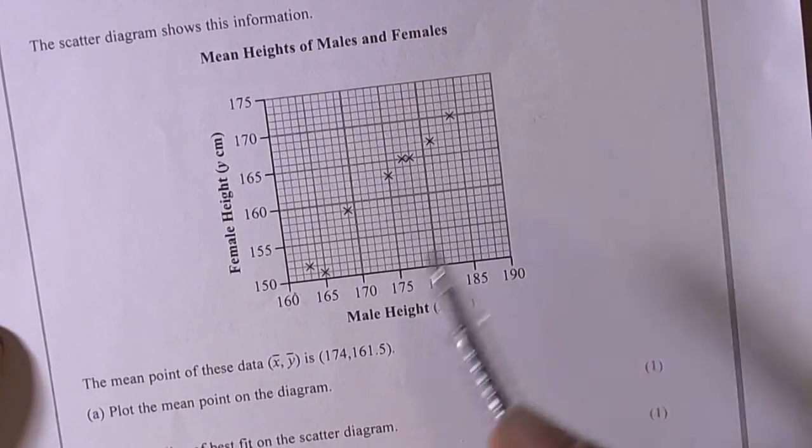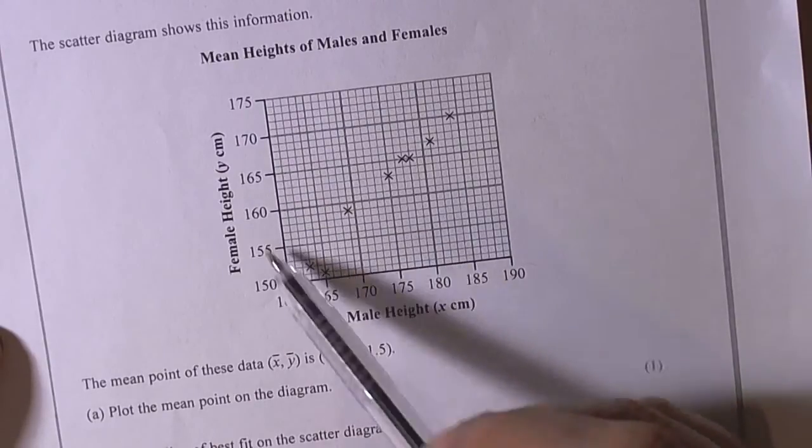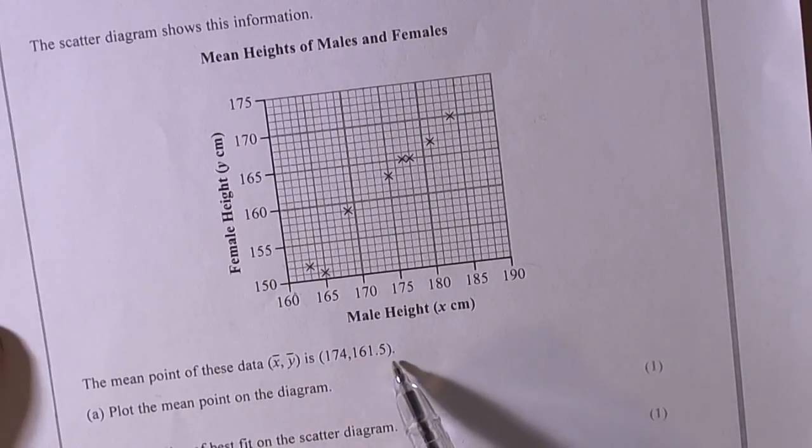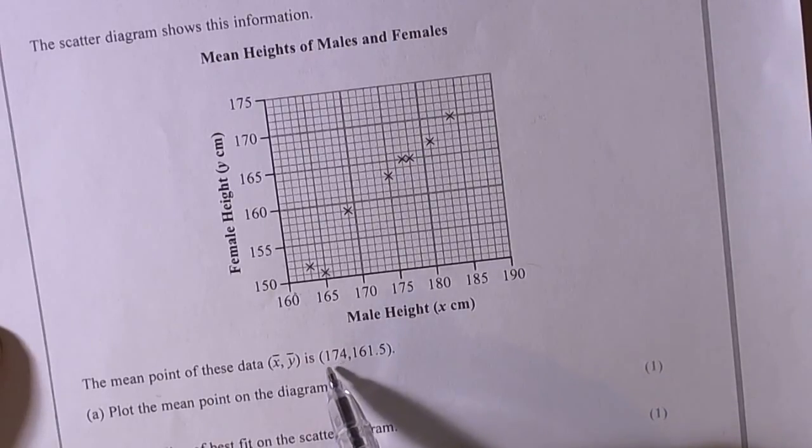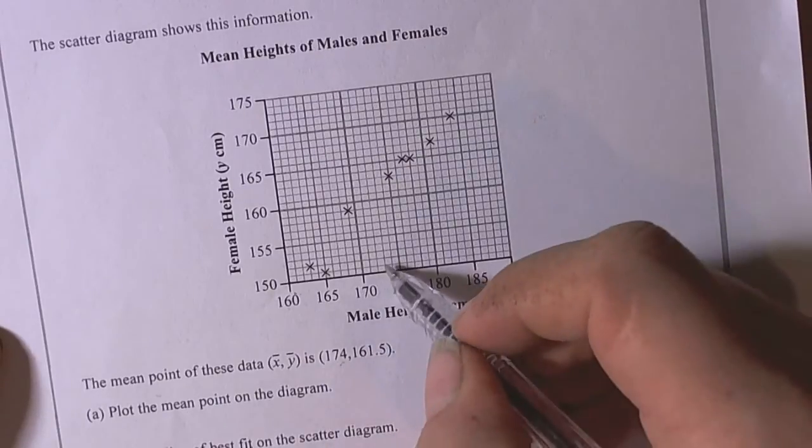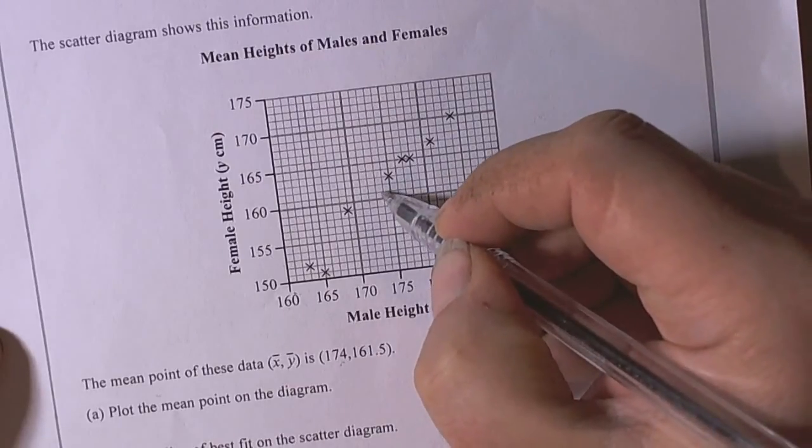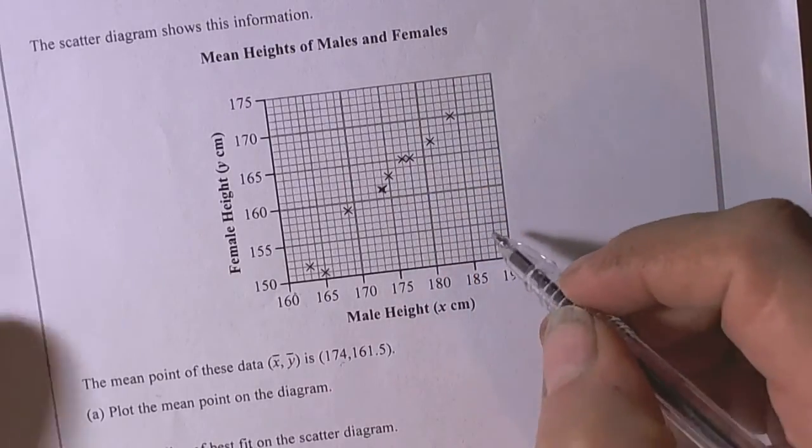What we've got to remember about scatter graphs in GCSE statistics is that you always must plot the mean point of the two variables, the bivariate data. Here they've already given us the mean point, but remember you must calculate it if it's not been given. We've got 174 and 161.5, so we plot the mean point.